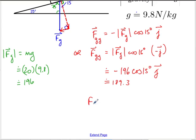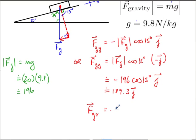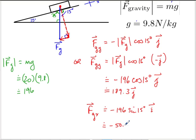The force of gravity in the x-direction is also negative — going down the incline. This time the x-component is opposite to the 15-degree angle, so it uses sine: Fg_x = −196 × sin(15°) ≈ −50.7 in the i-direction.